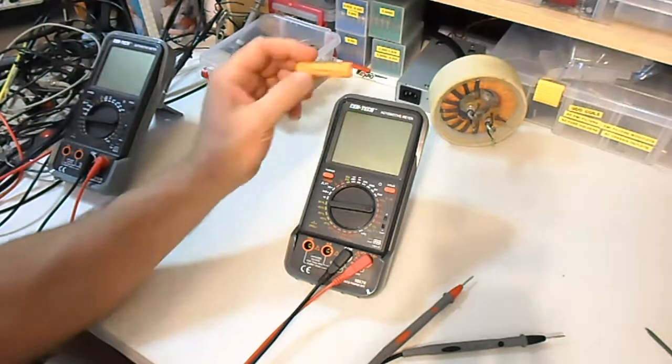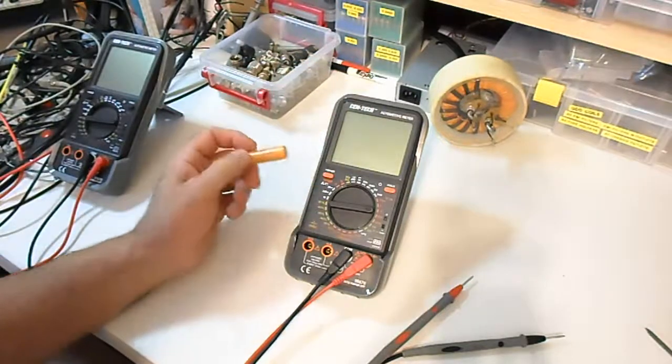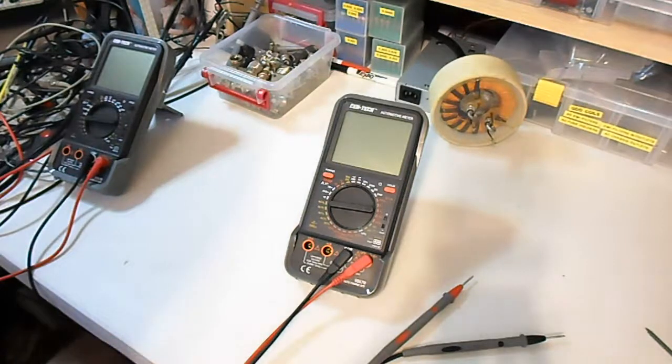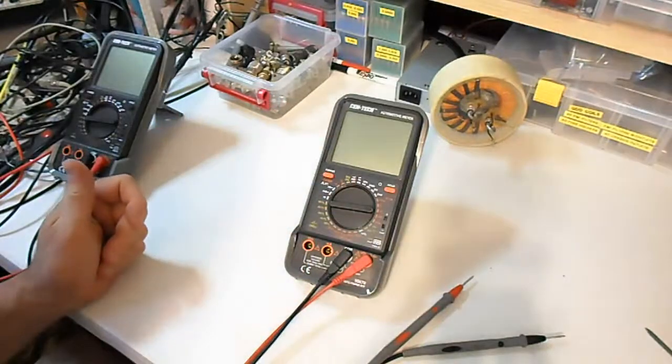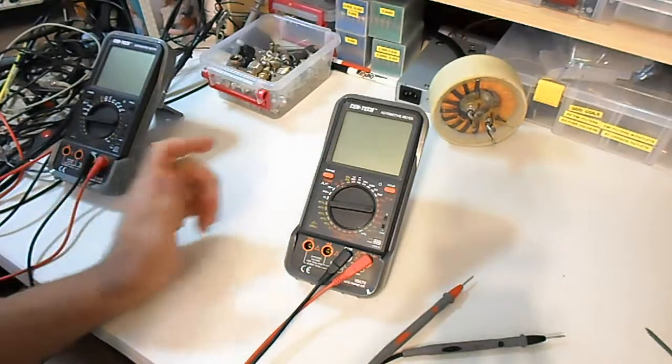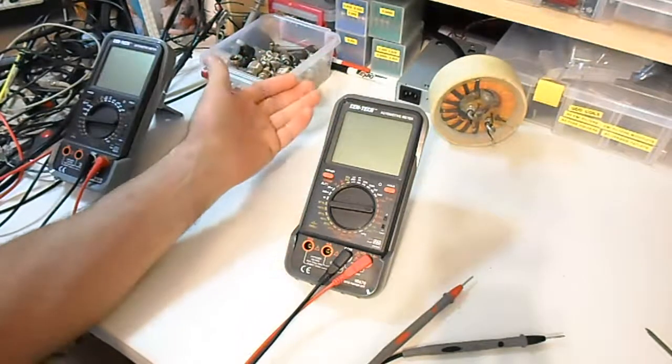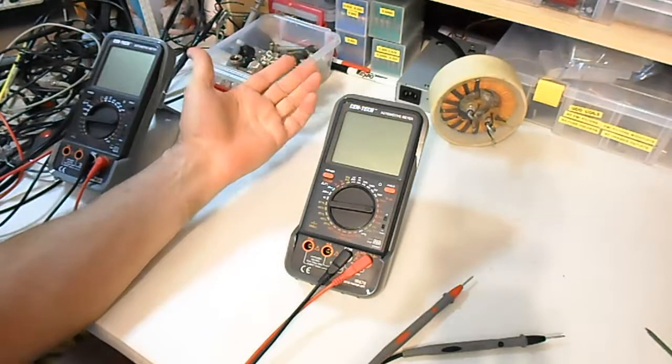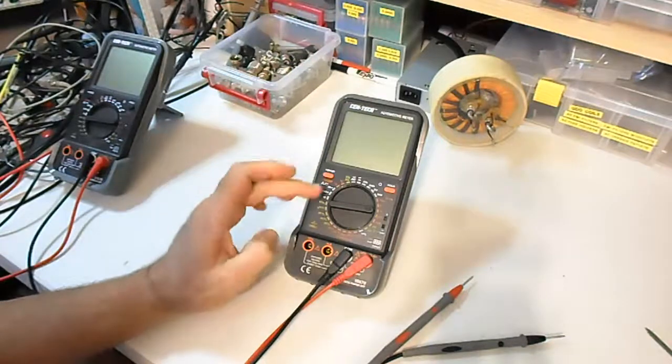Interesting thing is it's sold as an automotive meter. So it has dwell and tack on it, and it comes with a clamp on probe that you clamp around the spark plug wires. It also has the regular other typical DMM functions. The interesting thing I find about this meter is it being an automotive meter that it actually pretty much sucks as an automotive meter. I really couldn't find any good use for it.